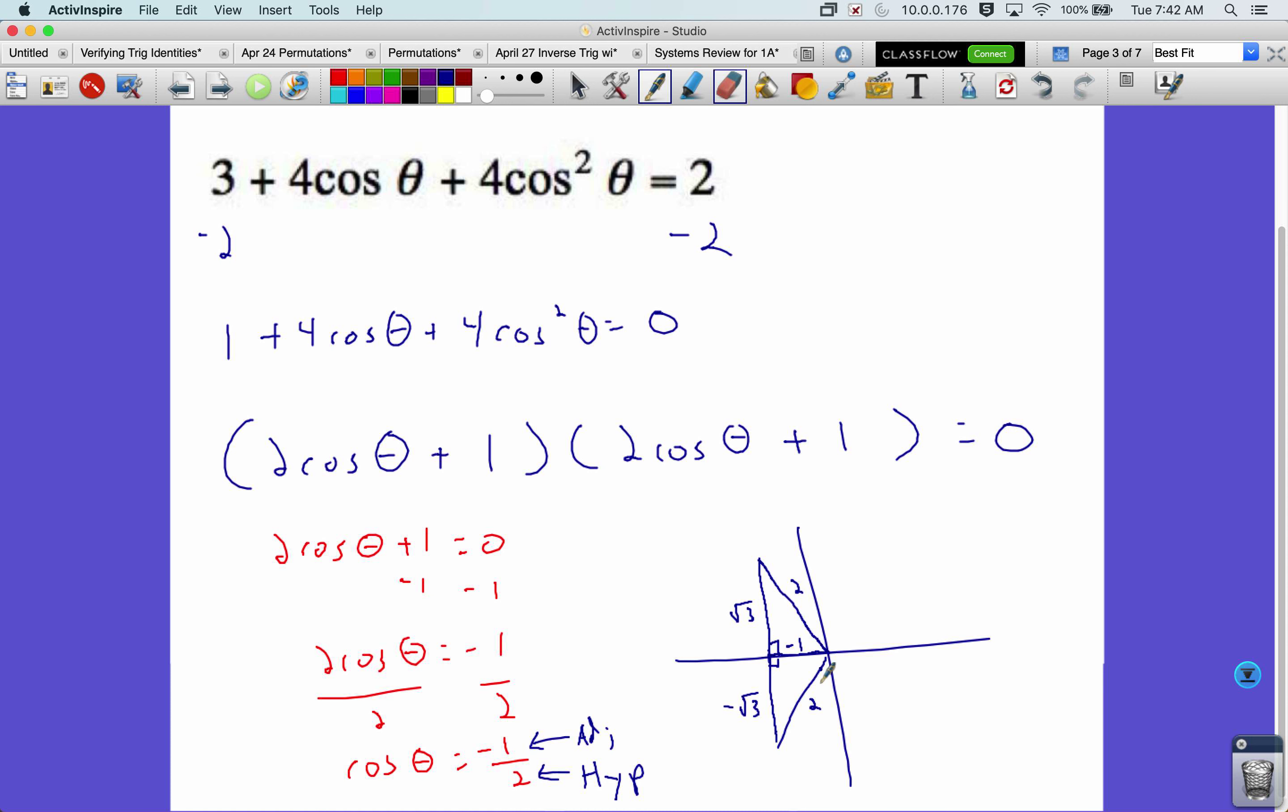But that is our 30, 60, 90 triangle. So this interior angle is 60. So out here is 120. Or two pi over three. And then this angle, if we go another pi over three, four pi over three to get here. So all the way around to there is four pi over three.